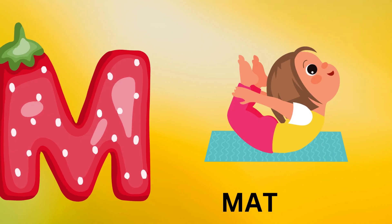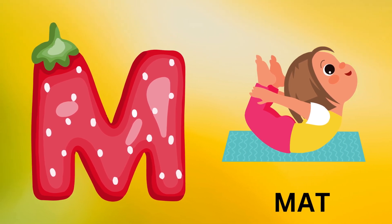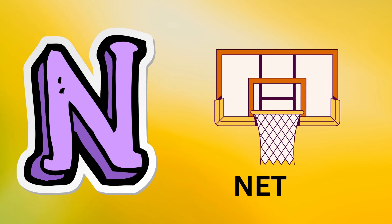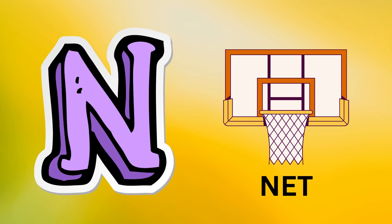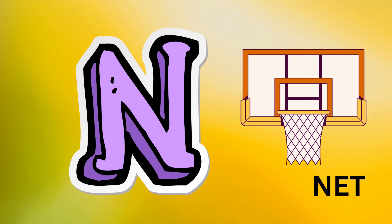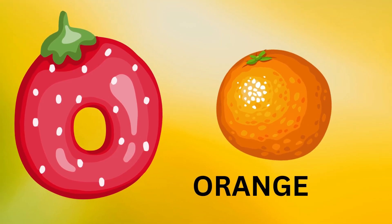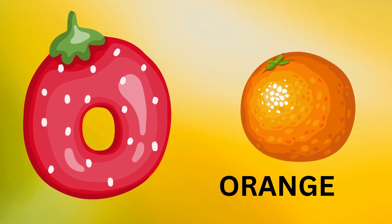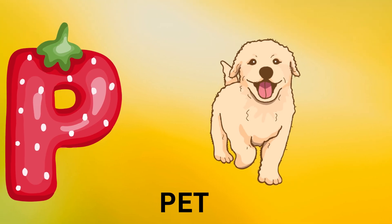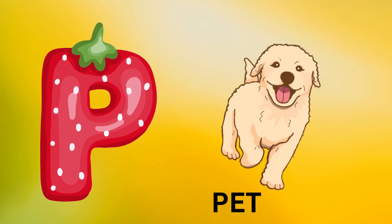M is for mat, m-m-mat. N is for net, n-n-net. O is for orange, o-o-orange. P is for pet, p-p-pet.